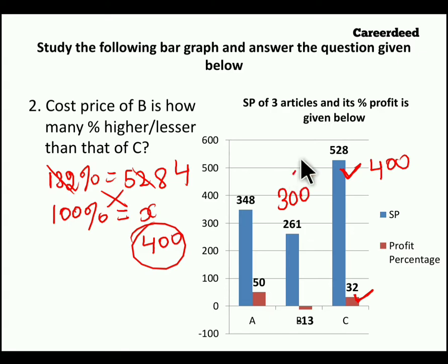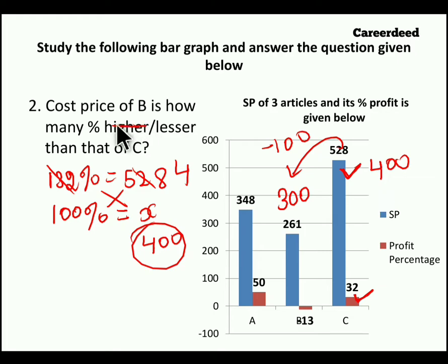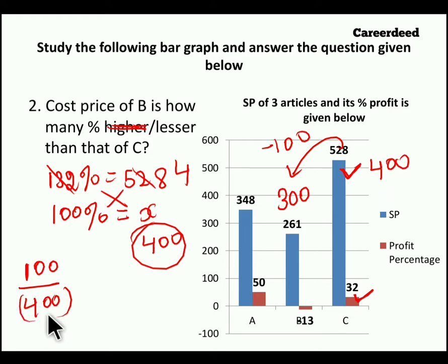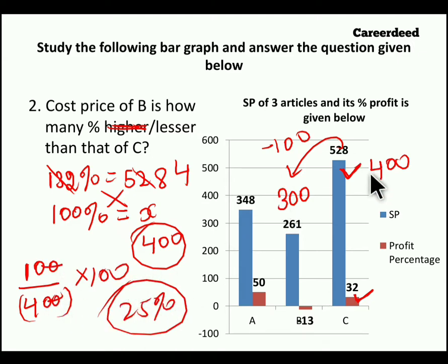Now article B is 100 rupees lesser comparing to article C. Since the question asks cost price of article B compared to article C, article C comes in the denominator. So 100 divided by 400 into 100, which is one-fourth of 100, gives 25%. So article B is 25% lesser comparing to article C.